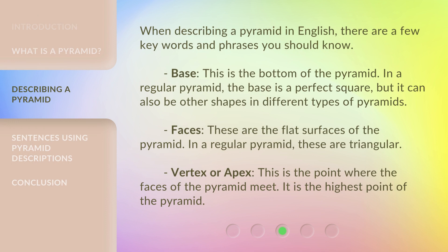When describing a pyramid in English, there are a few key words and phrases you should know. Base — this is the bottom of the pyramid. In a regular pyramid, the base is a perfect square, but it can also be other shapes in different types of pyramids. Faces — these are the flat surfaces of the pyramid. In a regular pyramid, these are triangular. Vertex or apex — this is the point where the faces of the pyramid meet. It is the highest point of the pyramid.